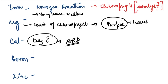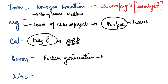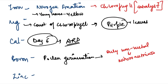Next is boron. It is very essential for pollen germination, so the deficiency of boron leads to no flowering or fruit development — making boron the answer to this question. One more essential feature of boron: it is the only non-metal among the micronutrients in plants. A question might come regarding the only non-metal present as a micronutrient in plants.